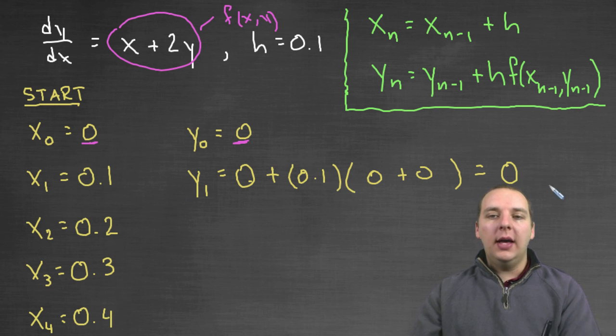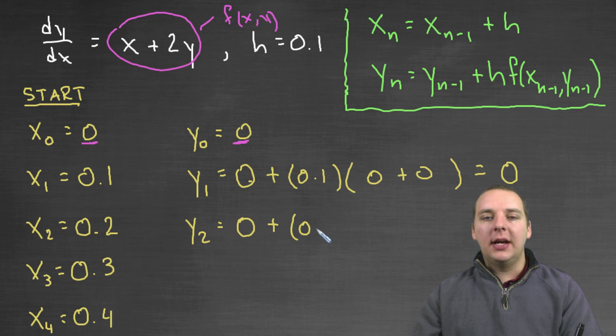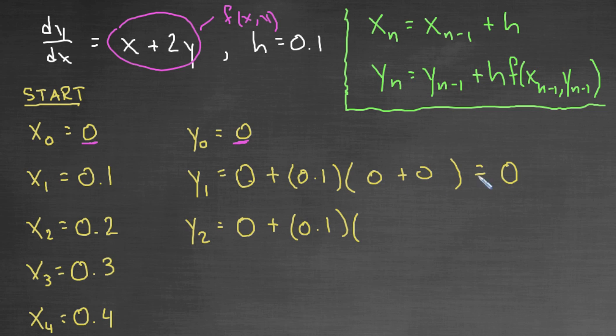So I've got a new x, y coordinate value. When x is 0.2, let's figure out what y sub 2 is. Y sub 2, you'll take the previous y value, in this case 0, plus the step size of 0.1, and then we'll take the previous x, y coordinate, 0.1, 0, and plug it in the differential equation. So we'd have 0.1 plus 2 times 0, 2 times the last y coordinate, which would be 0. Do that math, 0.1 times 0.1 is 0.01.